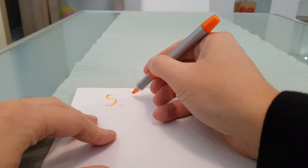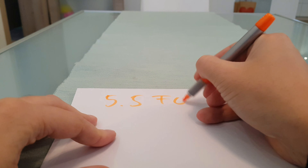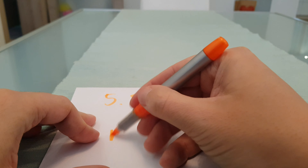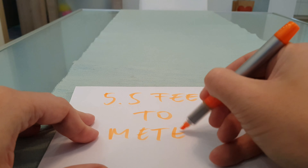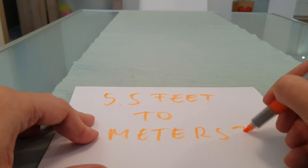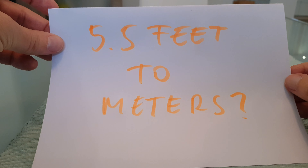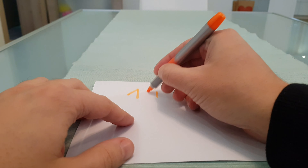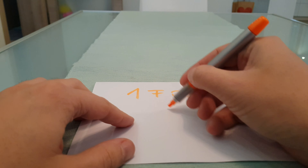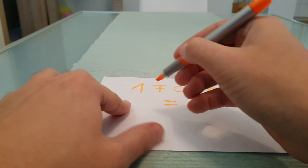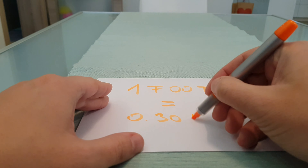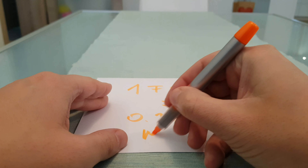In this video I will show you how to convert 5.5 feet to meters. Here is the formula: 1 foot equals 0.3048 meters.